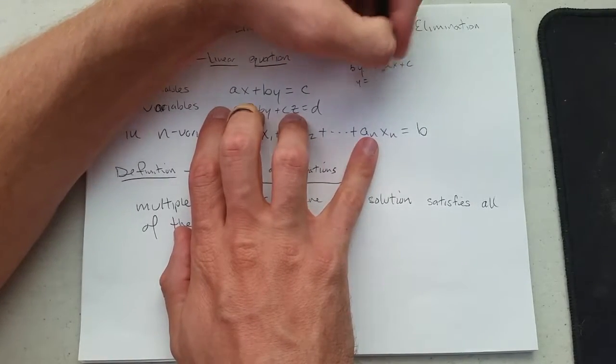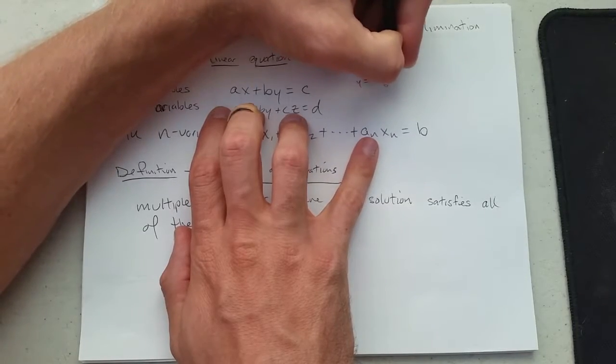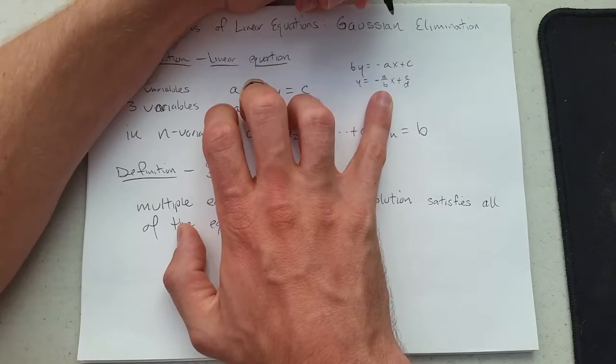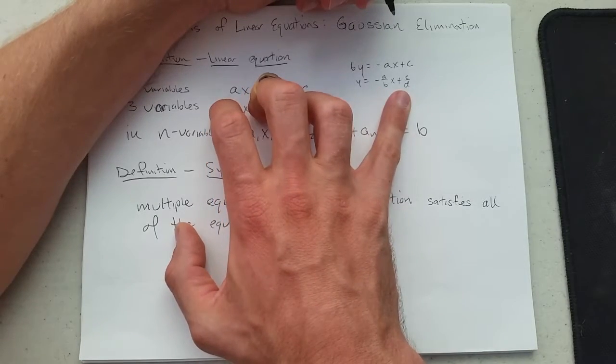y equals, I'm going to divide both by b at the same time, negative a over b times x plus c over d. You would have your slope is negative a over b and your y intercept would be c over d.